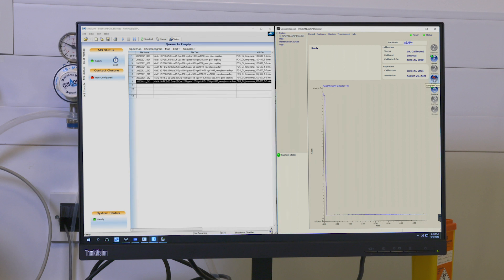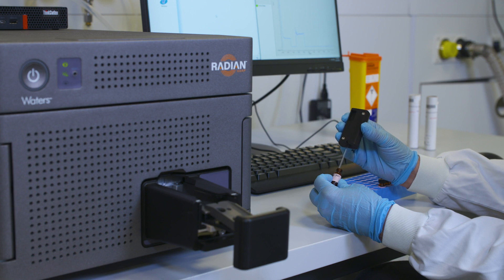An automated bake-out procedure removes any potential contamination that might be present prior to starting the analysis. Once clean, a simple dip and insert technique is all the analyst needs.